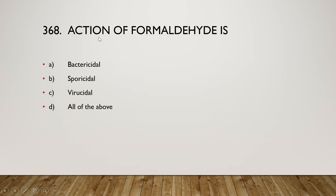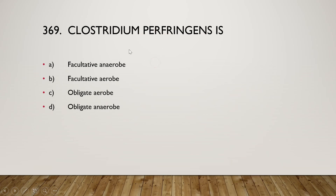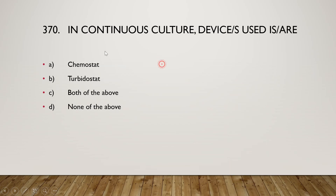Next: the action of formaldehyde is bactericidal, sporicidal, viricidal, or all of the above? The right answer is option D, all of the above. Next: Clostridium perfringens is facultative anaerobe, facultative anaerobe, obligate anaerobe — the right answer is option D, obligate anaerobe. Next: devices used in continuous culture are chemostat, turbidostat, both, or none? The right answer is option C, both.